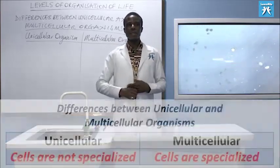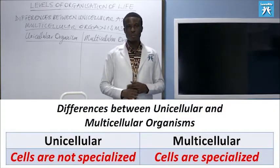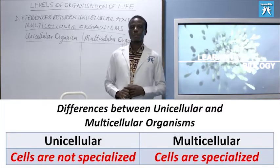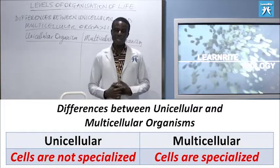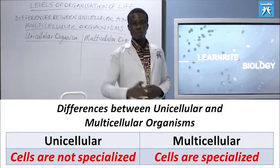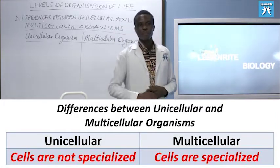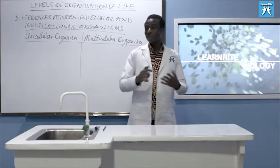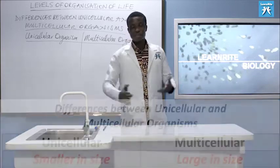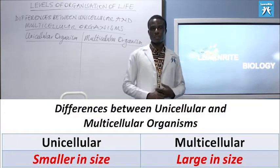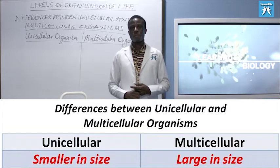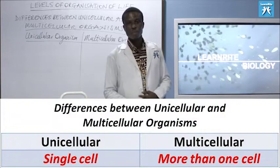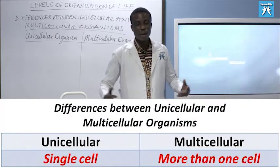In a unicellular organism, there is no specialization of cells. But in a multicellular organism, there is specialization of cells. In terms of size, it's clear that unicellular organisms are smaller in size than multicellular organisms. Unicellular organisms are made up of only one cell, while multicellular organisms are made up of more than one cell.